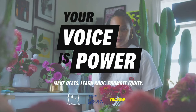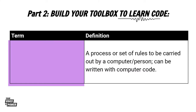If the definition is already in your assignment, you're going to write down the term that matches the definition. This first one we've already talked about in Part 1: a process or set of rules to be carried out by a computer or person. It can be written with computer code. The answer is algorithm. Go to your document and write down algorithm for this first term.